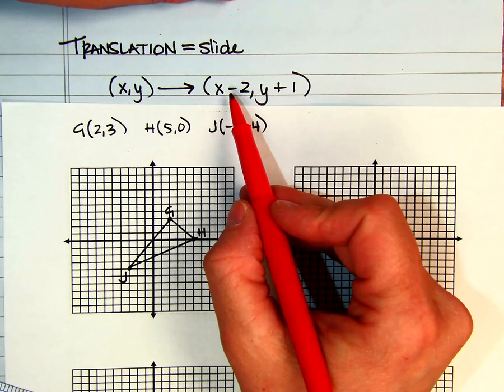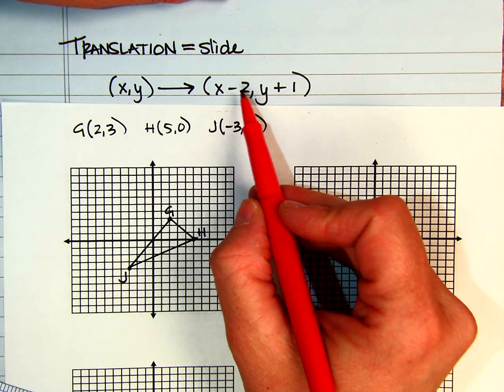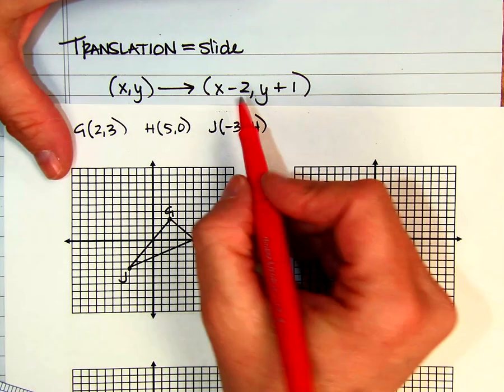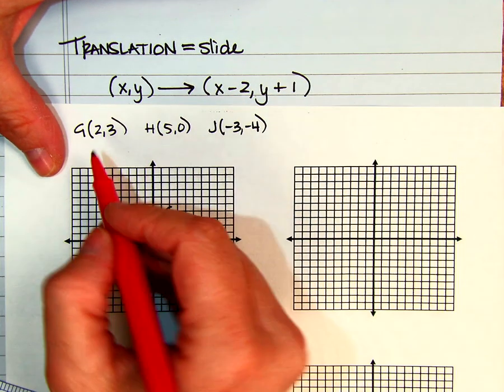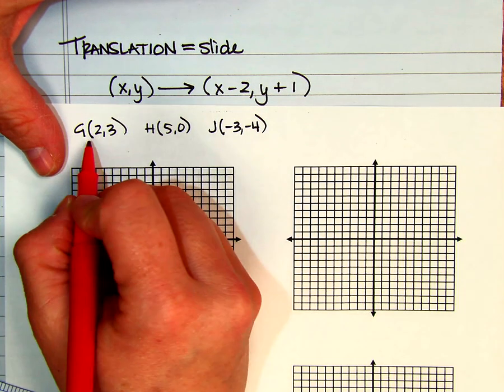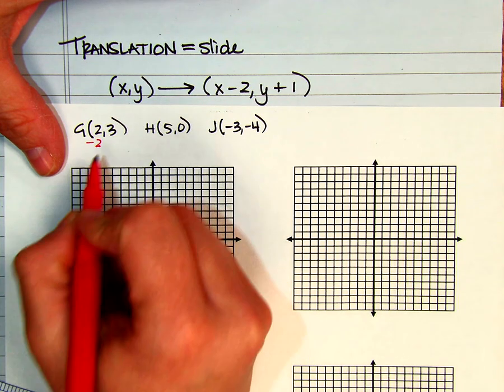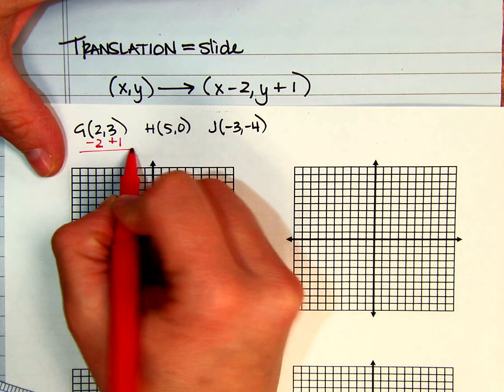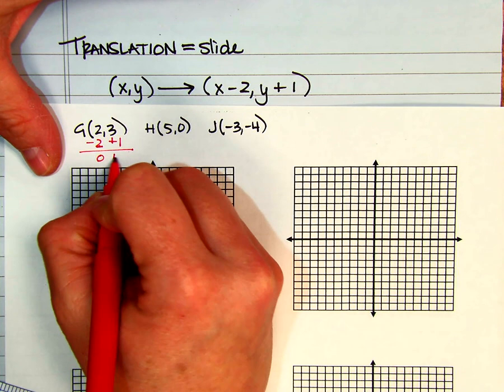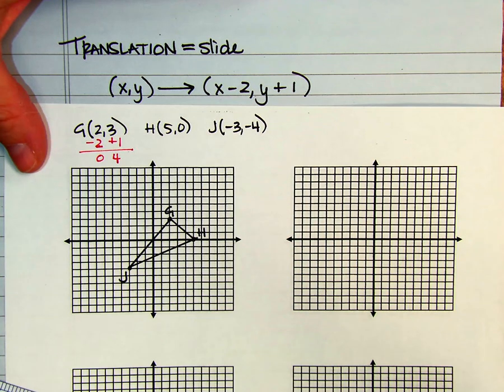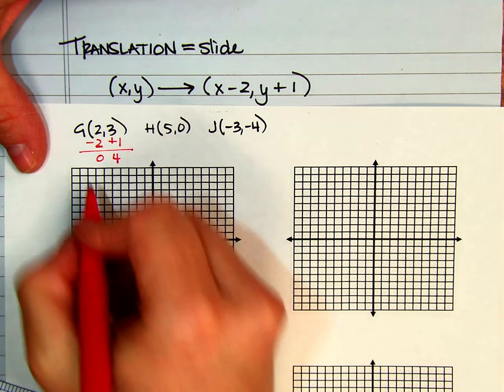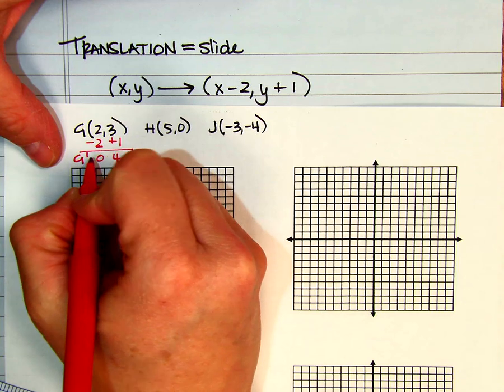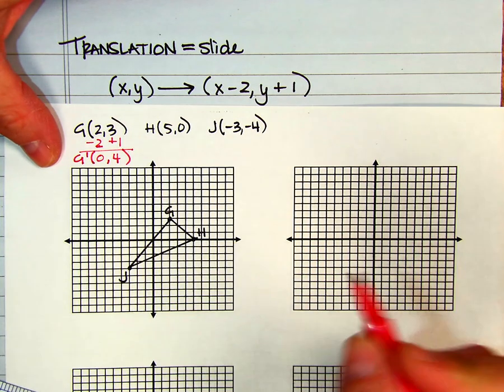Okay, there's a couple things that you can do for this. If I know that I am using the rule of x minus 2 and y plus 1, then I can do exactly what that says to do. If I'm at G, I'm going to subtract 2 from the x, and I'm going to add 1 to the y. It gives me (0,4). So even if we don't have this graph, so G prime would be at the order pair of (0,4).